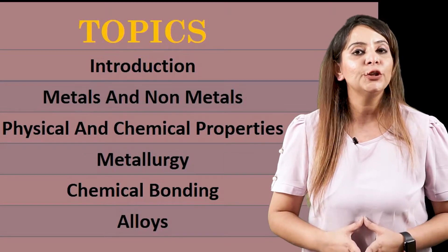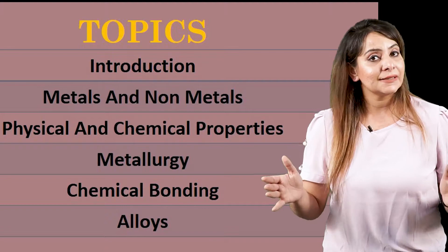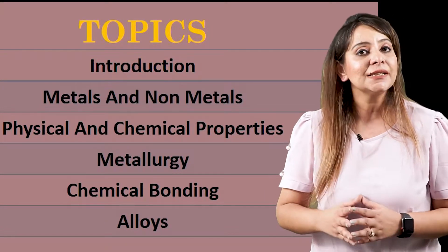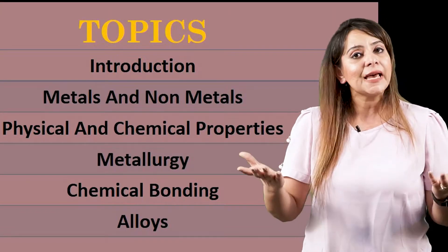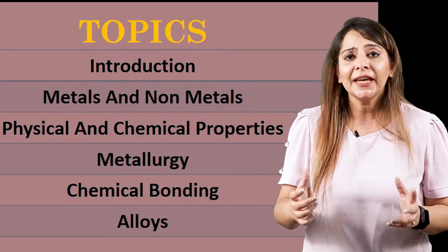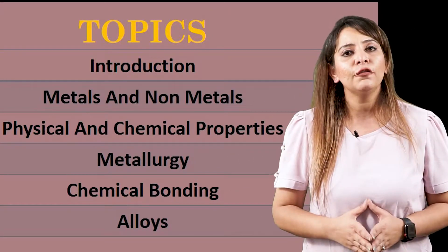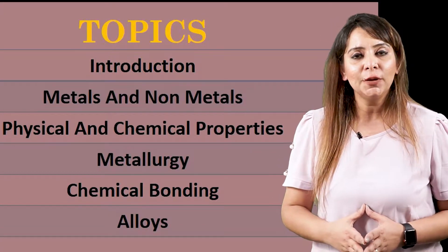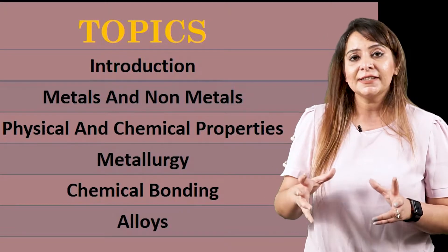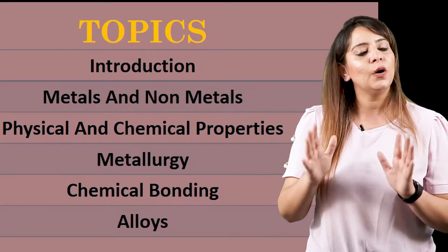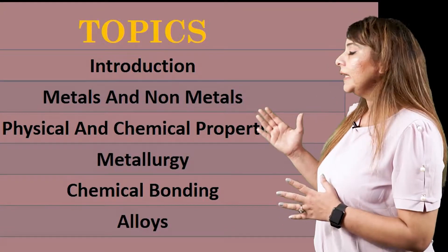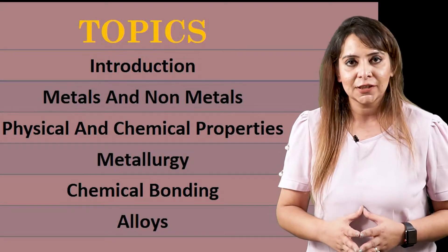Let's see what topics we are going to cover in this interesting chapter. The first topic is the introduction about metals and non-metals. Second, we'll cover the physical properties of metals and non-metals. Then we'll move on to the chemical properties, followed by metallurgy — the process of extracting metals. Then chemical bonding, and finally alloys.